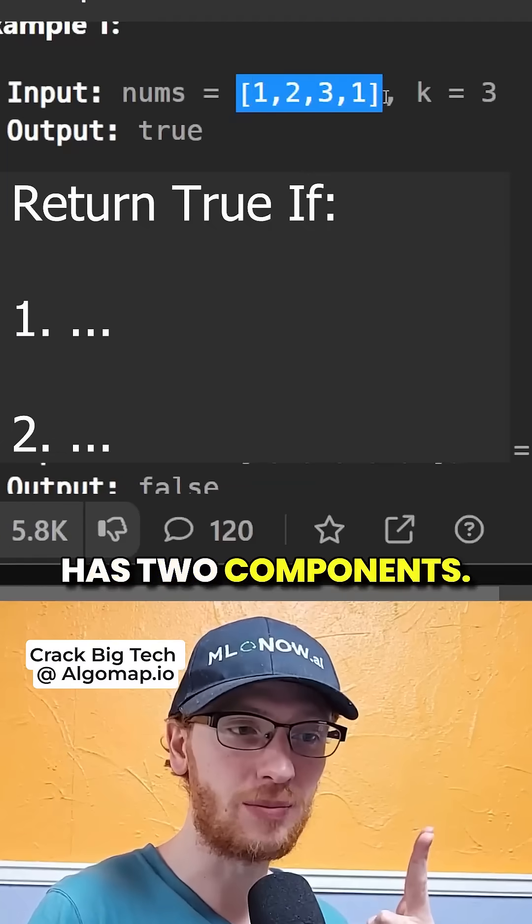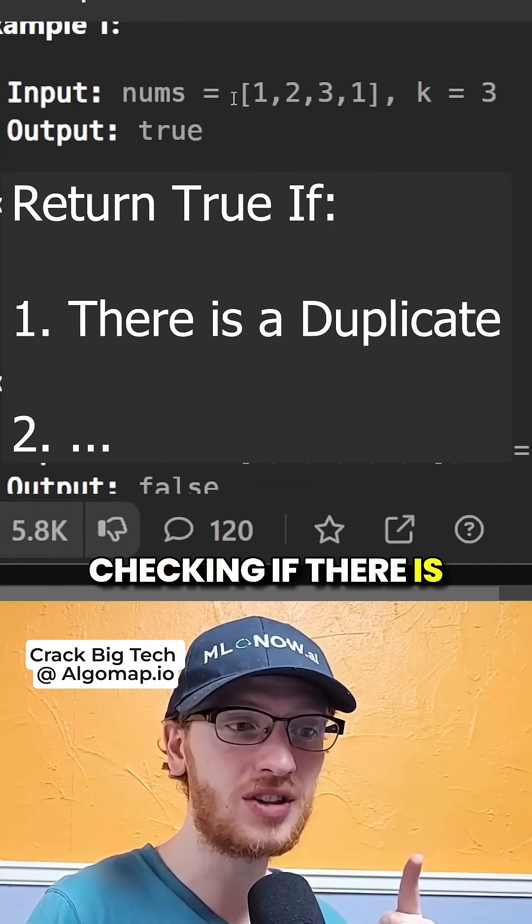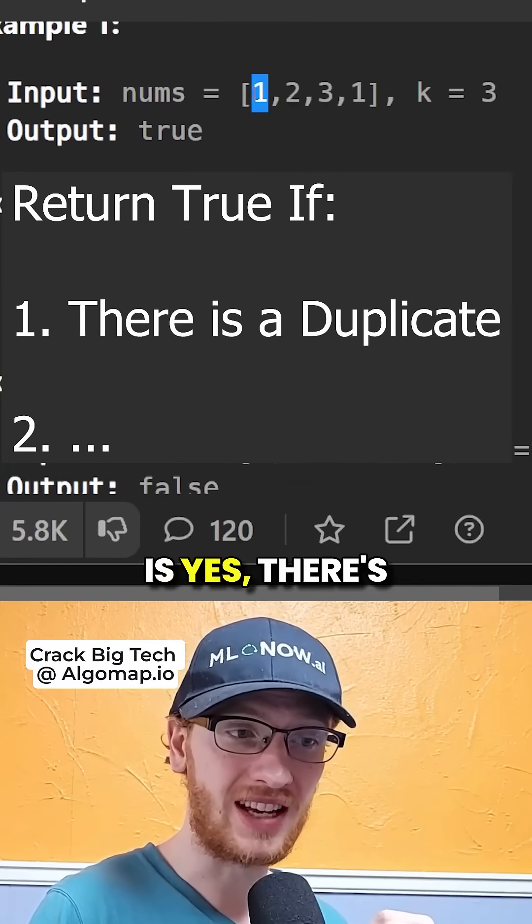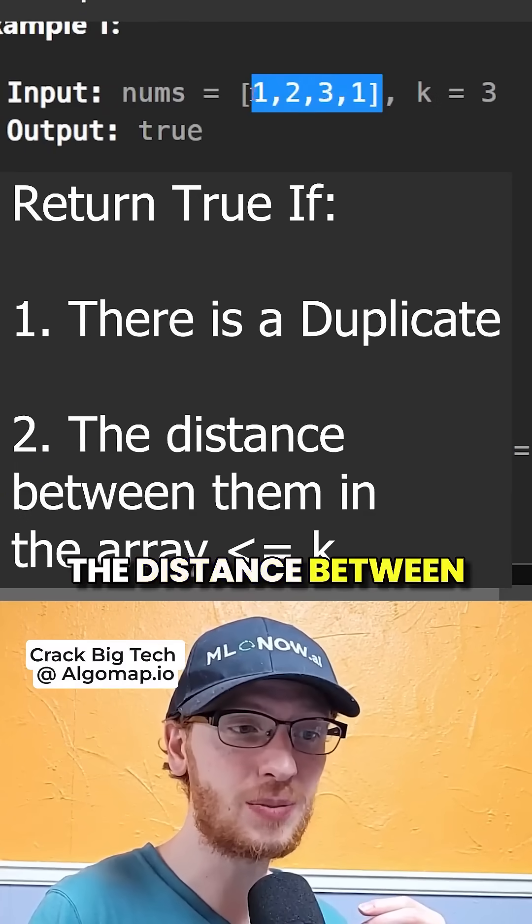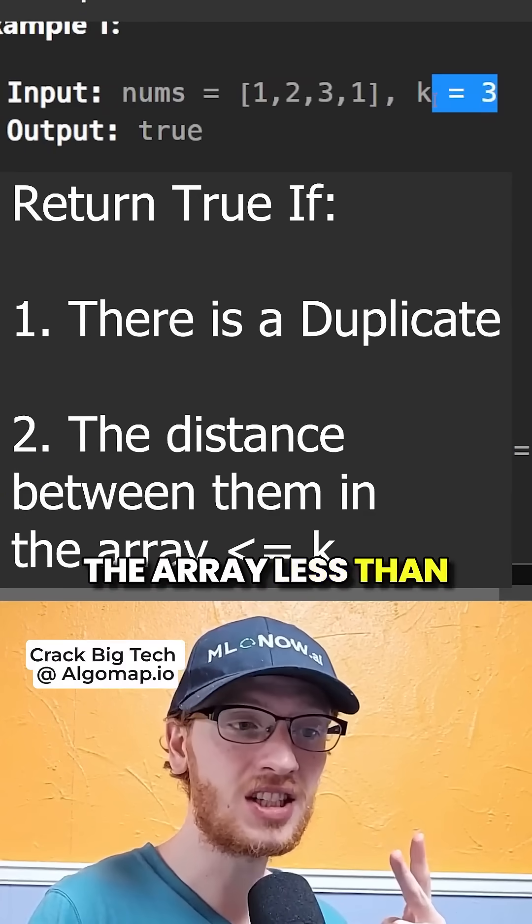Now this problem has two components. The first is checking if there are any duplicates in the array. The second component is yes there's a duplicate, but between these two duplicates, is the distance between these two in the array less than or equal to k.